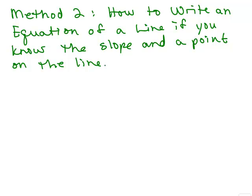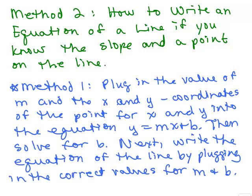In this video, I'm going to go over a second method for how to write an equation of a line if you know the slope and a point on the line. First, remember what Method 1 was: we plugged in the value of m, then took the x and y coordinates of the point and plugged them into y equals mx plus b, solved for b, and then wrote the equation again plugging in the values for m and b.